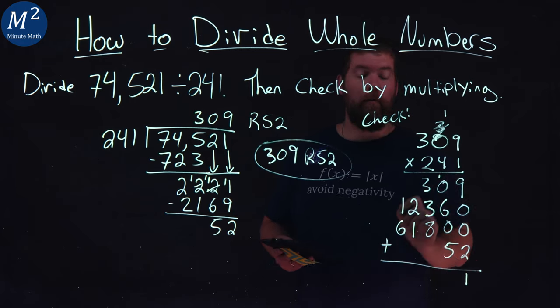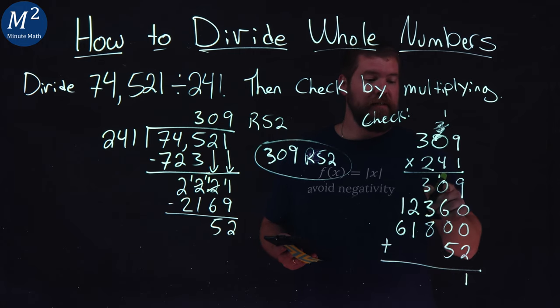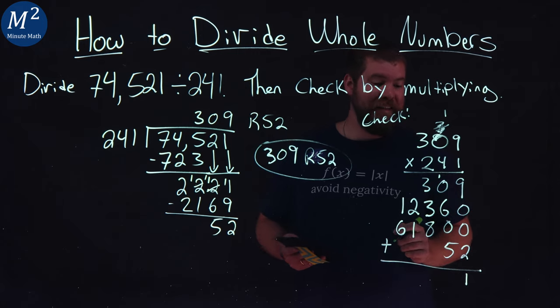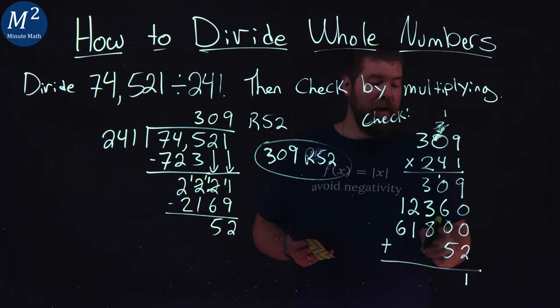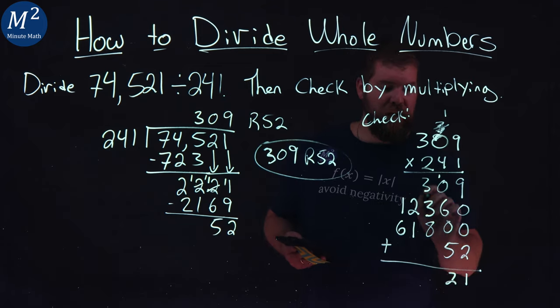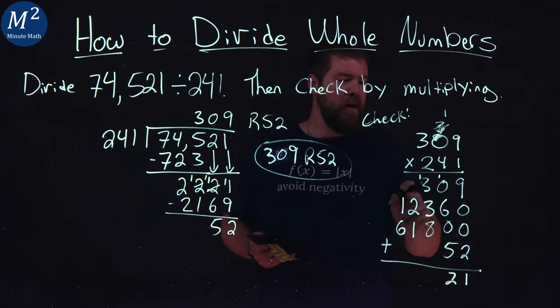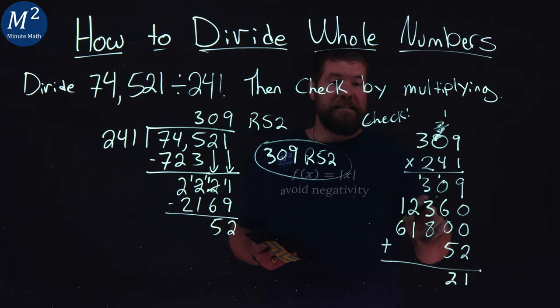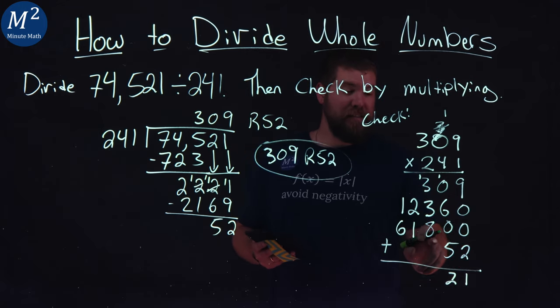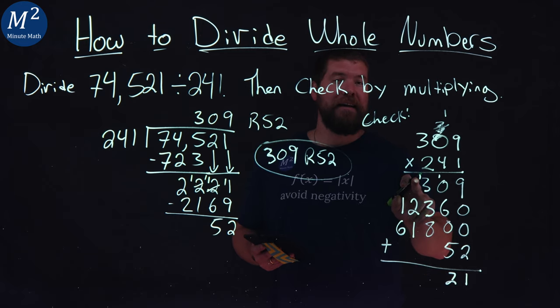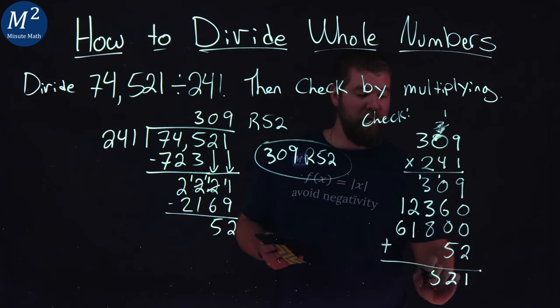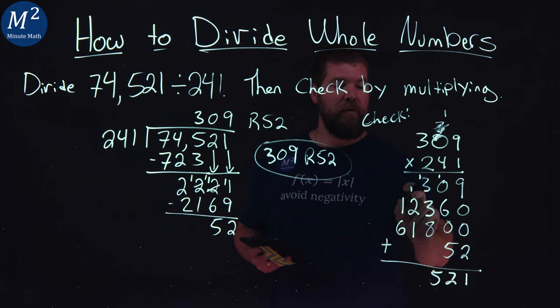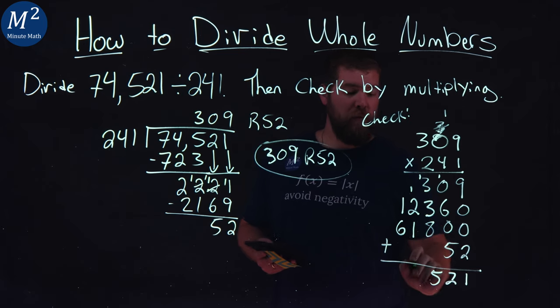1 here carry the 1. 1 plus 0 is 1 plus 6 is 7. Then we add 5 and we get, what is that, 12 right there? 12. 2 carry the 1. 3 plus 3 is 6 plus 8 is 14 plus that 1 is 15. So, we have a 5 here. We're carrying the 1. 1 plus 2 is 3 plus 1 is 4. And 1 plus 6 is 7.